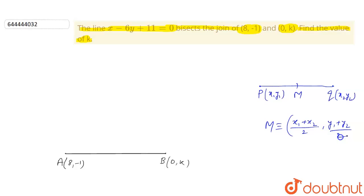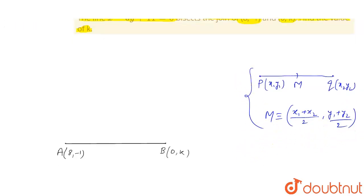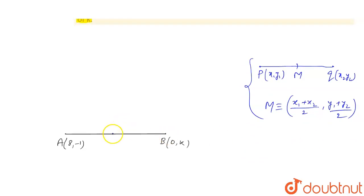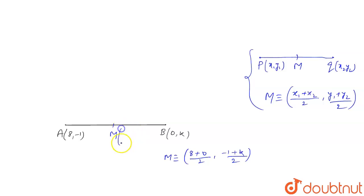Using this concept, we can say the midpoint of this line segment AB will be M, and M will be ((8 + 0)/2, (-1 + k)/2), or you can say this point is 4 and (k - 1)/2. So M = (4, (k - 1)/2).